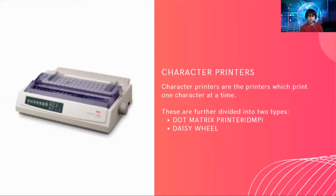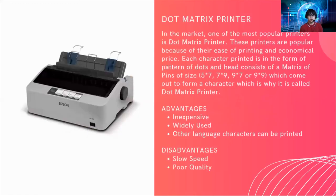Character printers are divided into two types: dot matrix and daisy wheel. The dot matrix printer is one of the most popular printers, popular because of ease of printing and economical price. Each character printed is in the form of a pattern of dots, and the print head consists of a matrix of pins of size 5×7 or 7×9 etc., which come out to form a character. The advantages of dot matrix printers are that they are inexpensive and widely used, and other language characters can be printed. The disadvantages are slow speed and poor quality.